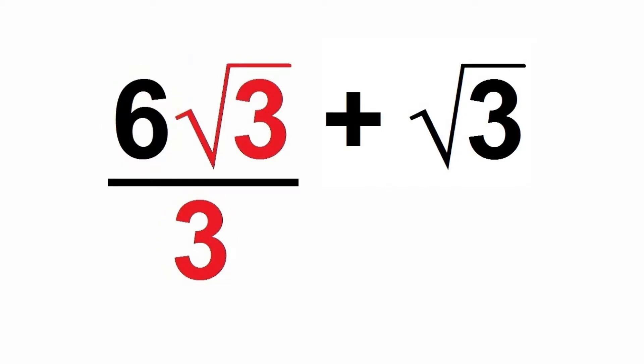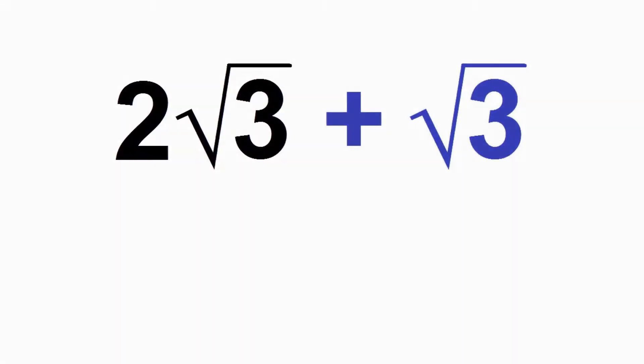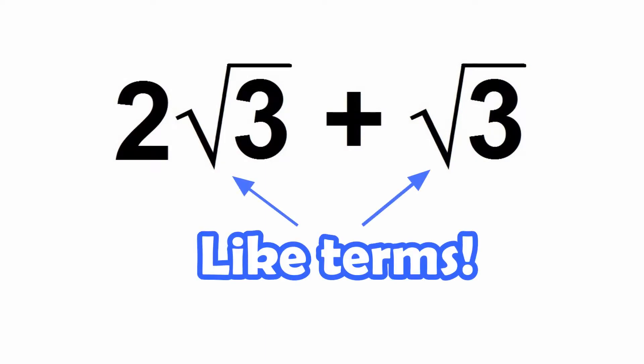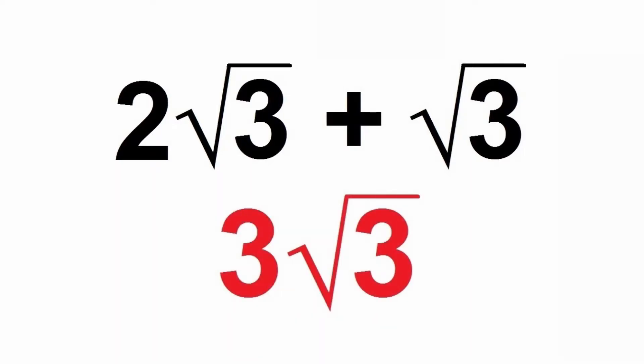Both 6 and 3 can divide by 3, so if we factor 3 out of the fraction, we'll have 2 root 3 plus root 3. And now we can see that these two terms are actually like terms. 2 root 3 plus another root 3 would be equal to 3 root 3. See how rationalizing the denominator allowed us to get to a much simpler fraction than the one we originally had?